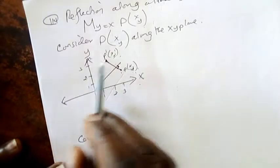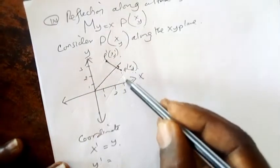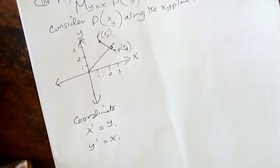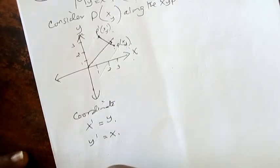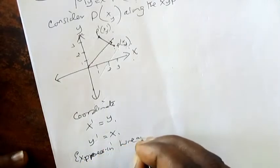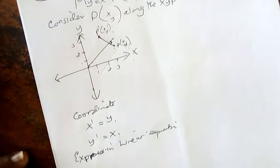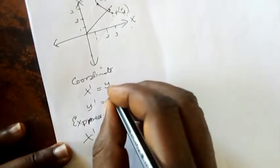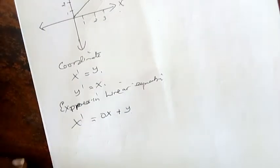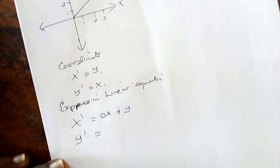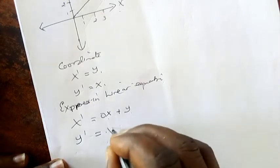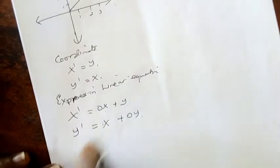Then y': y' is now 3. But originally this 3 was the value of x. So they exchange - they become opposite. This will be x. When we express this in linear equation form, x' = 0x + 1y, and y' = 1x + 0y.